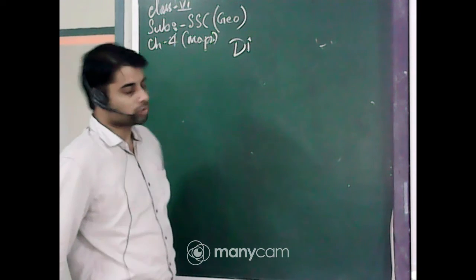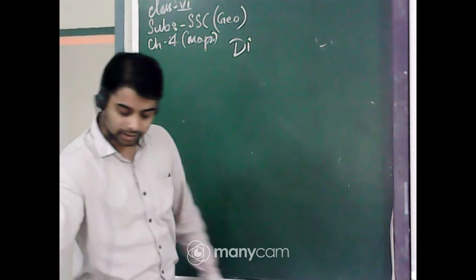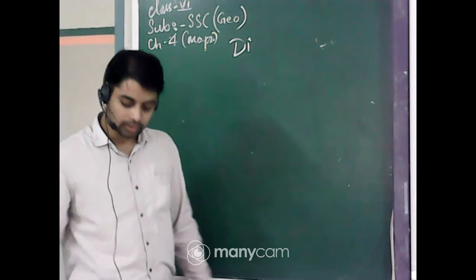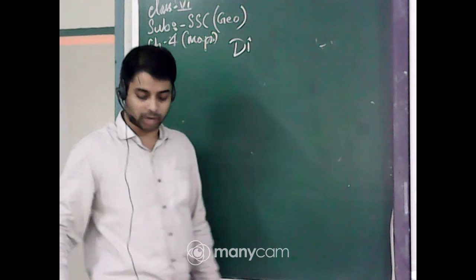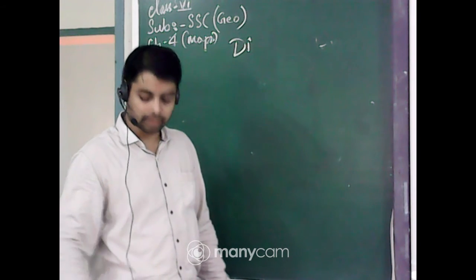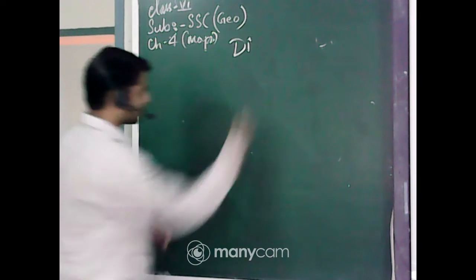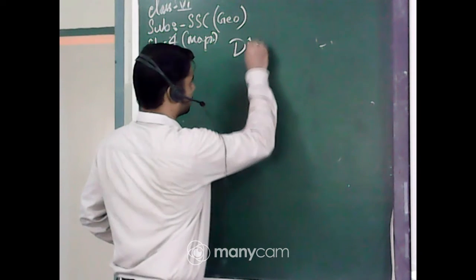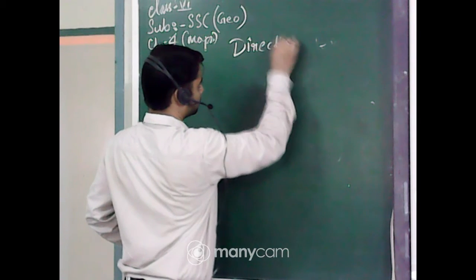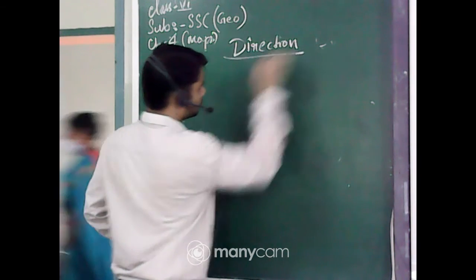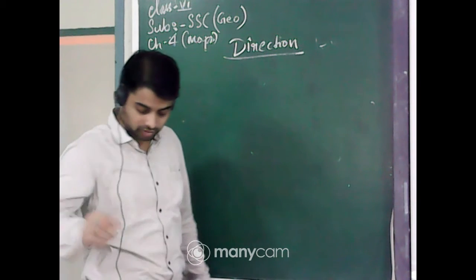Today in our social science geography class we're going to discuss the remaining components of a map. These components are direction and symbol. First we're going to discuss about direction. This sub-unit is present in your book on page number 24.